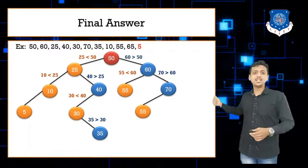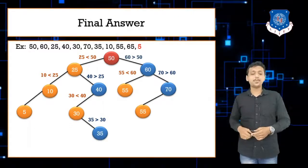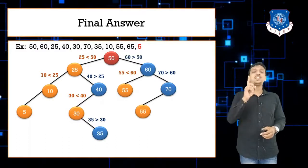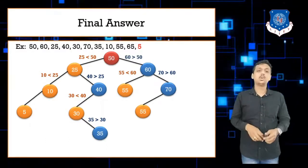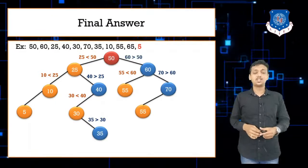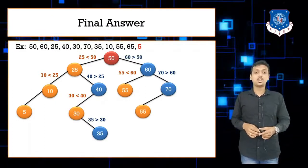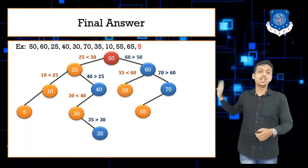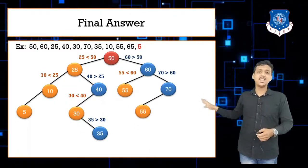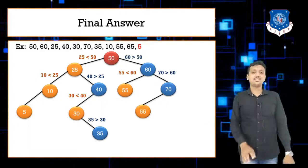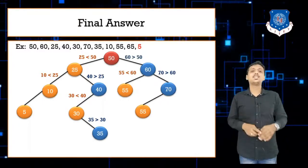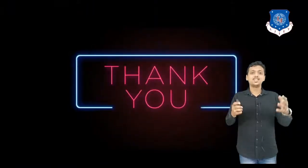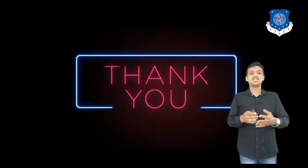This is our final binary search tree. Is it a binary tree? Yes — because it contains a maximum of 2 children per node. Is it a binary search tree? Yes — because all smaller values relative to each node are on the left side and all larger values are on the right side. That's it for today's lecture on BST insertion. Thank you so much.